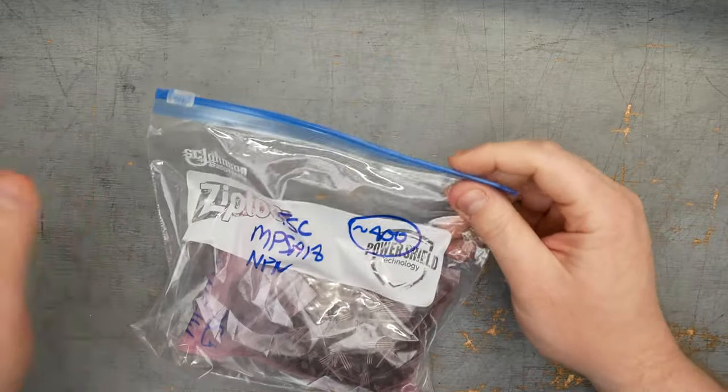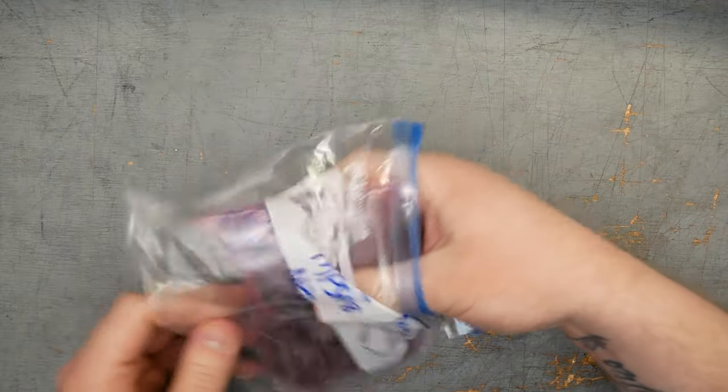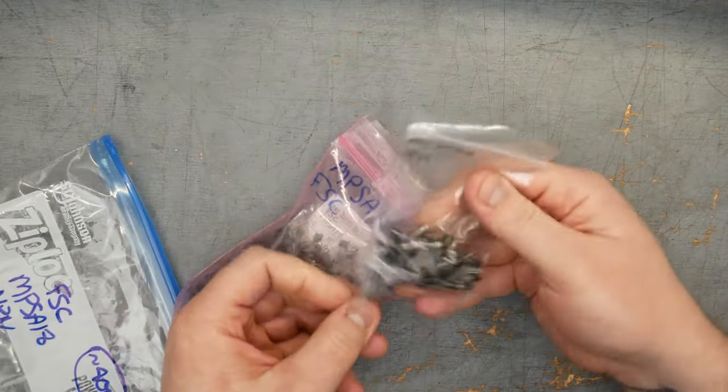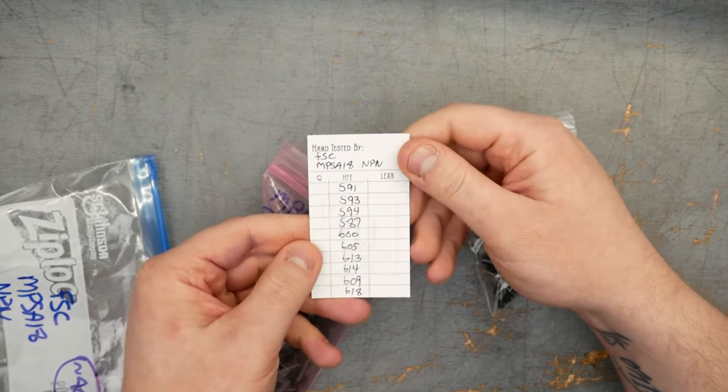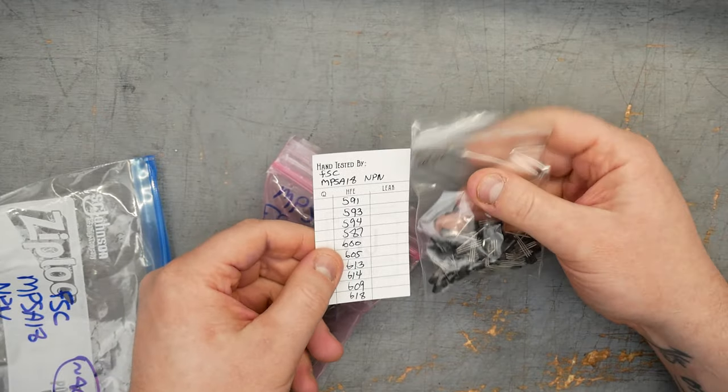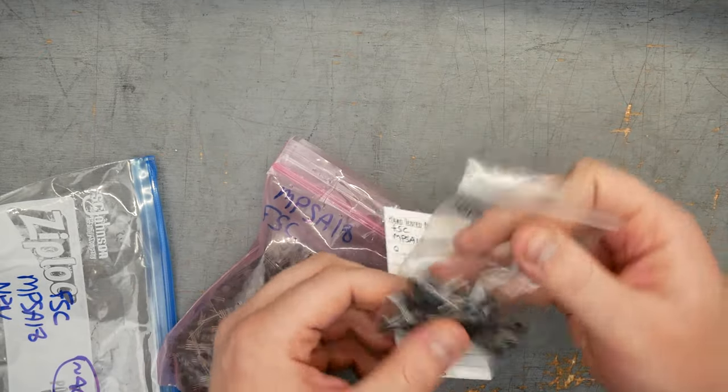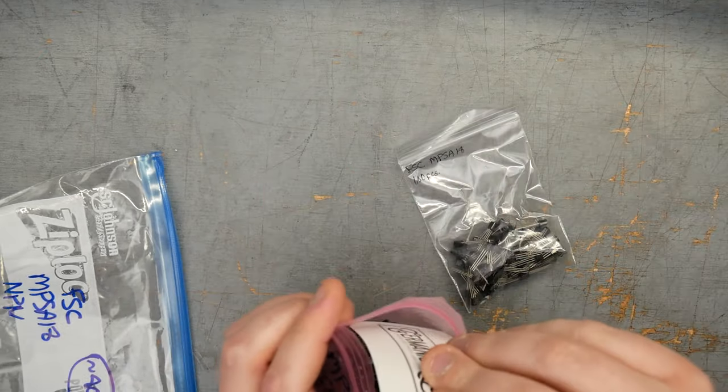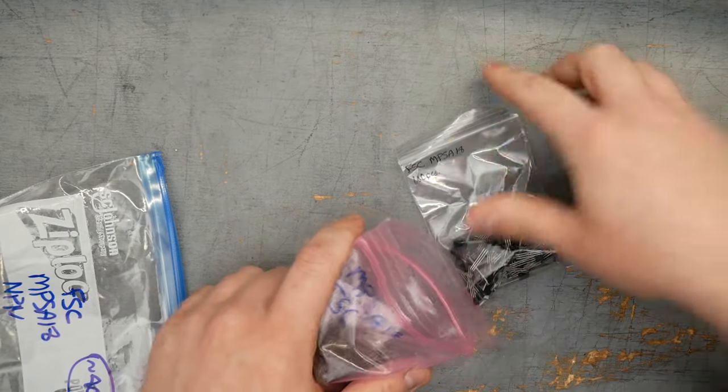Here's another product that's going to be similar to those BC 549s from Motorola. These are Fairchild MPSA 18s. I'm also selling these in lot of a hundred pieces. Here are the gains. These are also MPN BJTs. Pretty similar gains to the BC 549s. I don't know if the pinout is the same, but the application is going to be generally the same. And these are original Fairchild components.